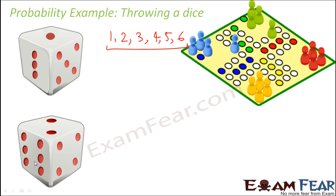Each of these outcomes is equally probable because when we are throwing a dice, it is not that the chances of getting a 6 are more than the chances of getting a 3. It is just a matter of chance — it might be a 3, it might be a 4, it might be a 2. It can be anything.